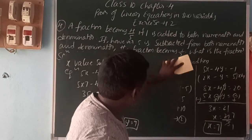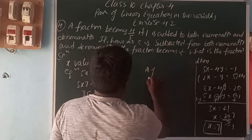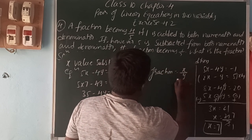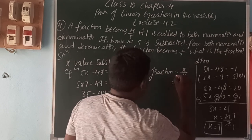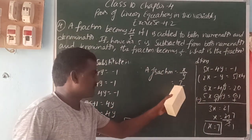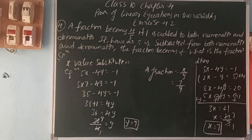So, the fraction is, therefore, the fraction is x by y, that is equal to 7 by 9. The fraction is x by y, then x value is 7, y value is 9. 7 by 9. Thank you.